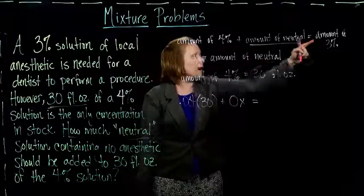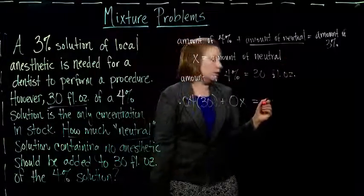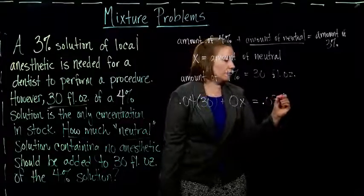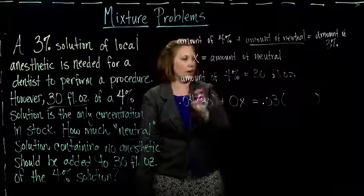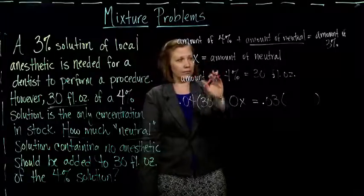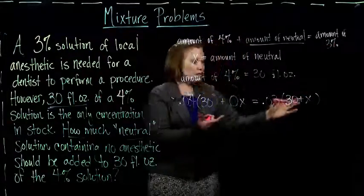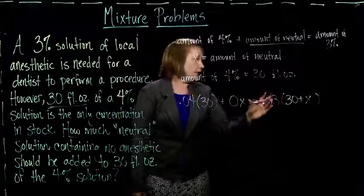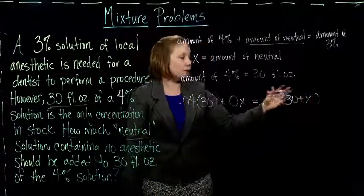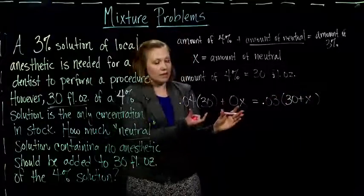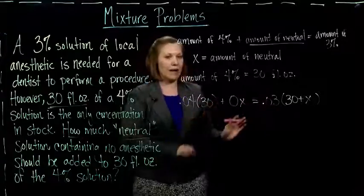And so to get the amount of 3%, this should equal if we take the total amount and multiply it by 0.03. So what's the amount of 3% solution? Well, that would be our 30 fluid ounces that we had from the 4% solution, and then plus what we add to it, the x amount that we don't know yet. That's the amount of 3%. So these should be equal. If we take our total amount and multiply it by 3%, that's the pure amount of pure anesthetic that we have in that solution, and it should be the same as if we took 4% of the 30 that we had and the 0% of the x that we have.